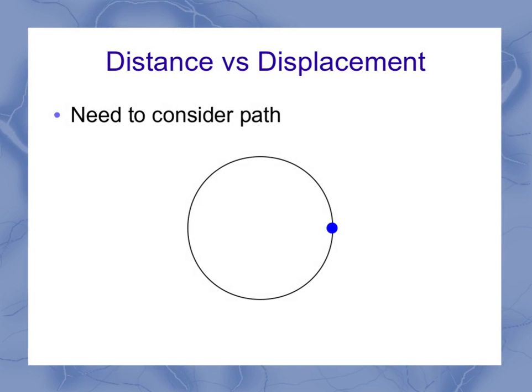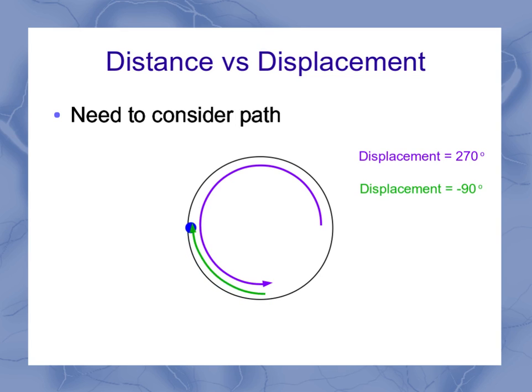If we think about distance versus displacement—and we did this in regular 1D kinematics quite a while ago—we have to consider the path. Here's another example: I'm going to go partway around the circle, 270 degrees or three-fourths of a revolution. But then I'm going to backtrack a little bit, so I've got a displacement of negative 90 degrees because I was going in the clockwise negative direction.